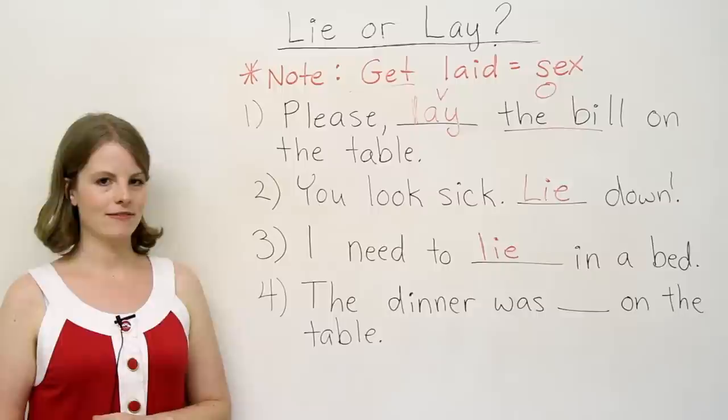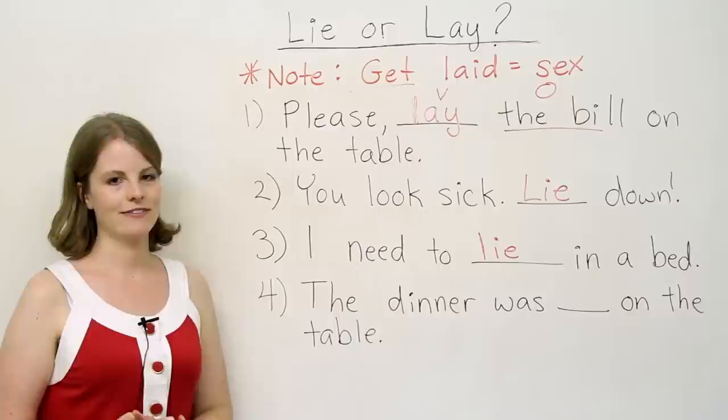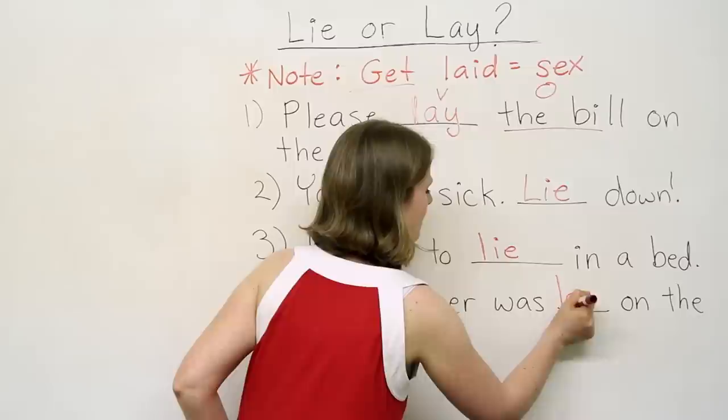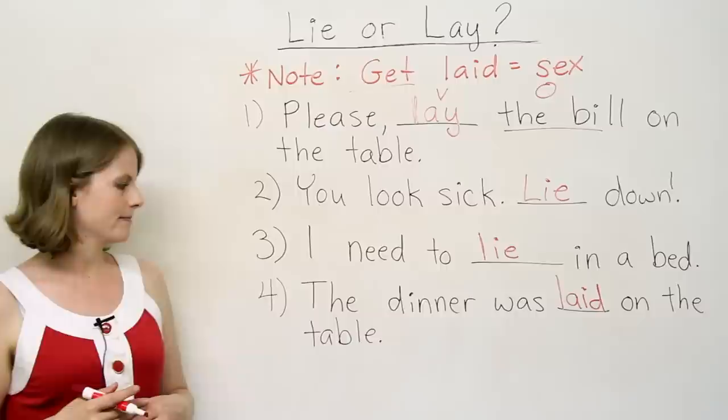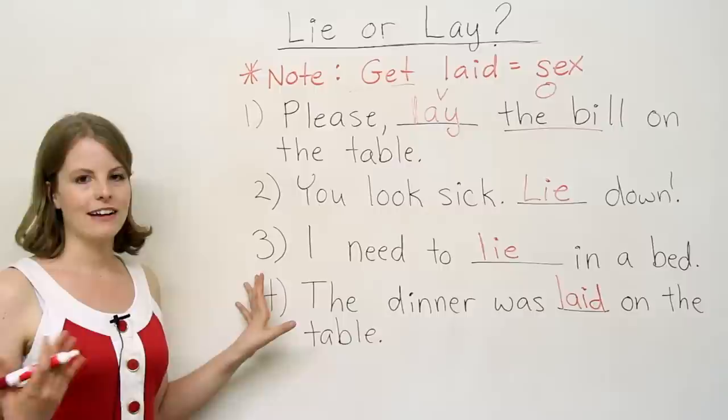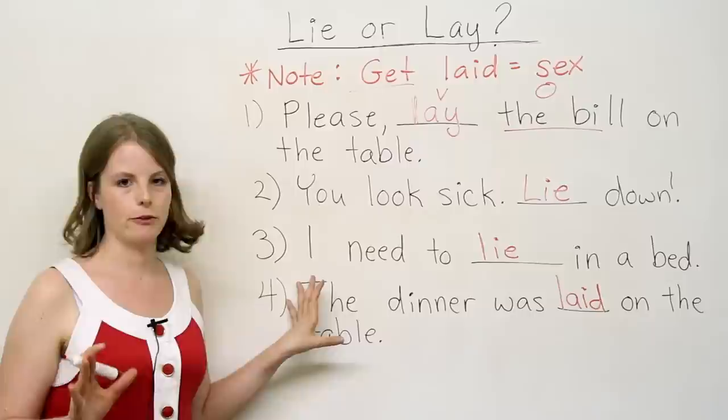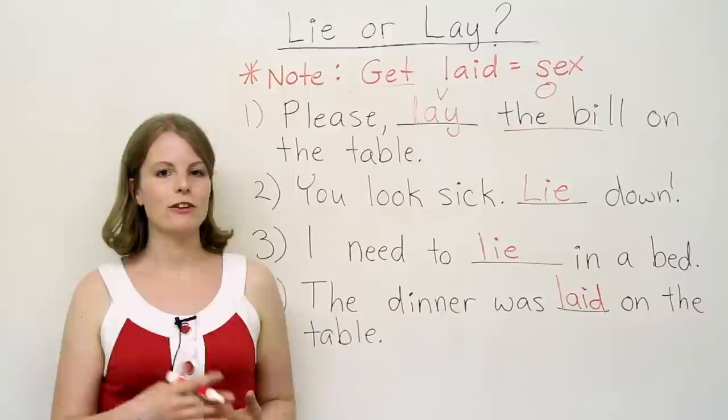Finally, number four. The dinner was on the table. The dinner was... Do you think it's going to be lie or lay? And which form? The dinner was laid on the table. So this last one was a little bit difficult because we're using the passive tense. So if you had trouble with this one, don't worry about it.